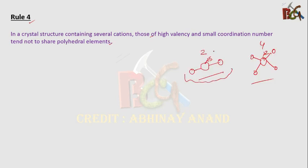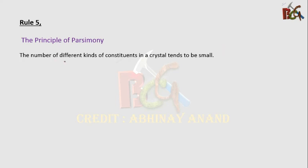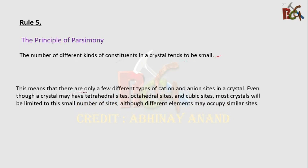Rule number 5 is the principle of parsimony. The number of different kinds of constituents in a crystal tends to be small. This means there are only a few different types of cation and anion sites in a crystal. Even though a crystal may have tetrahedral sites, octahedral sites, and cubic sites, most crystals will be limited to a small number of distinct sites, although different elements may occupy similar sites.